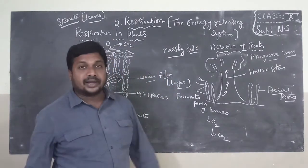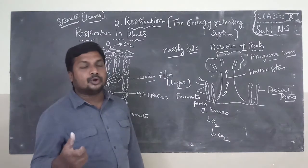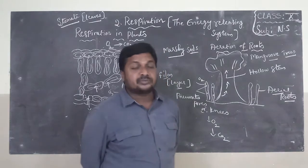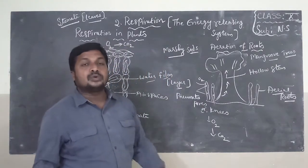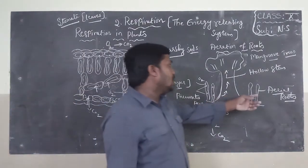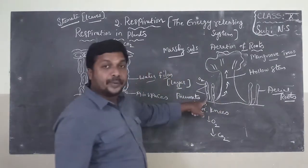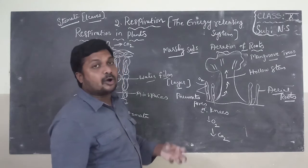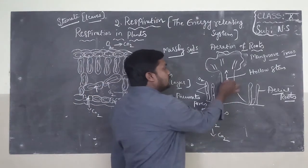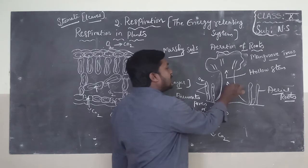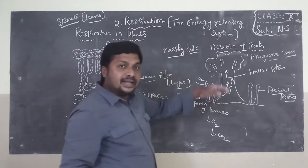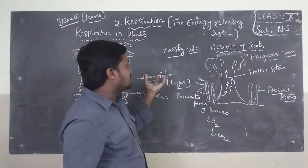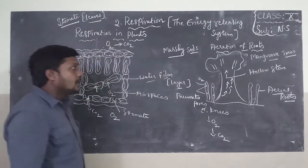For exam answers, write: Plants like mangrove trees grow in marshy soils near seashores, so they cannot perform root respiration. That is why they produce special roots to outside of the soil called aerial roots. These aerial roots have small openings called pneumatophores. With the help of pneumatophores they take oxygen from surroundings, and through their hollow stem, oxygen is transported inside while CO2 is released. This is aeration of roots in mangrove trees.